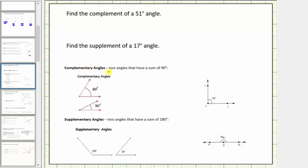Complementary angles are two angles that have a sum of 90 degrees. Here's an example of two angles that are complementary. These two angles are complementary because the sum of the measures is equal to 90 degrees — notice 30 degrees plus 60 degrees equals 90 degrees.